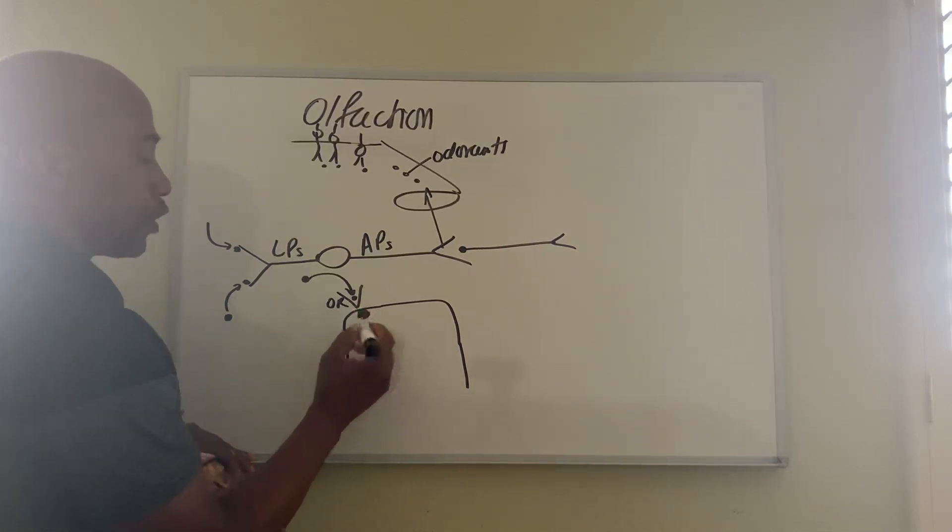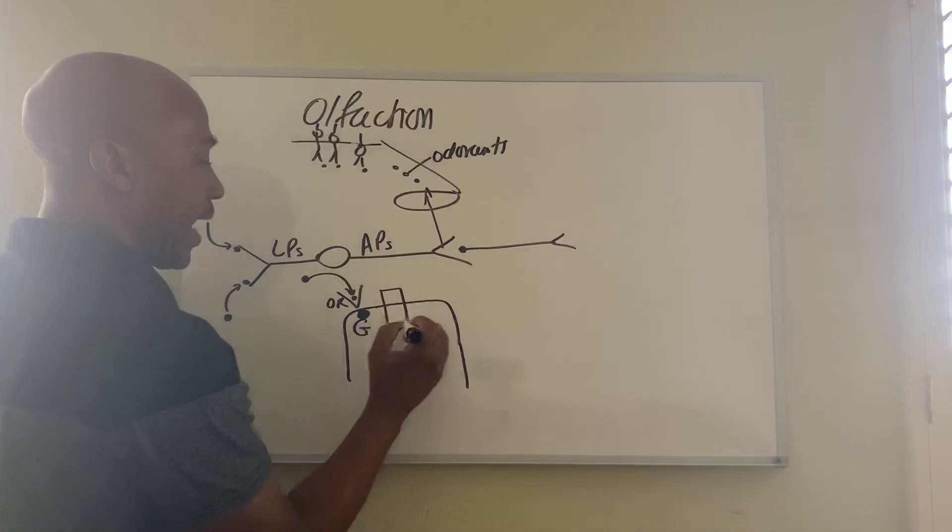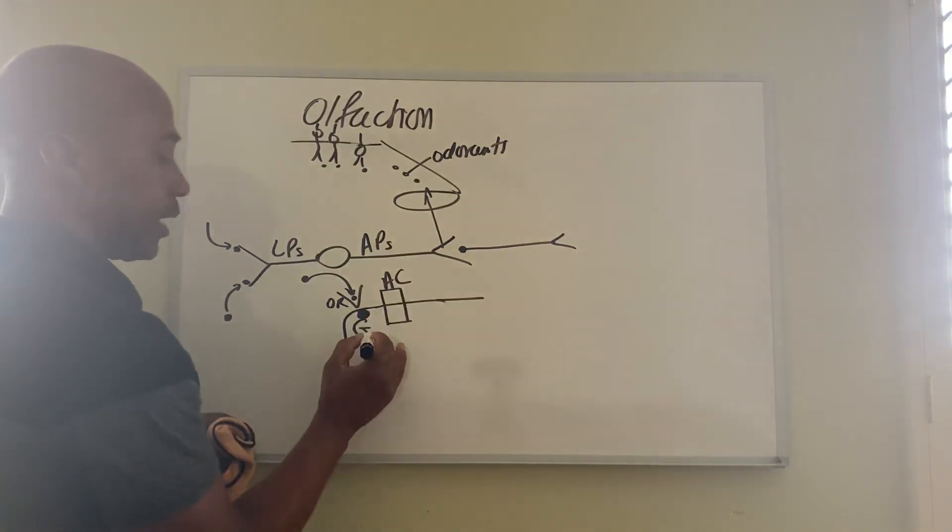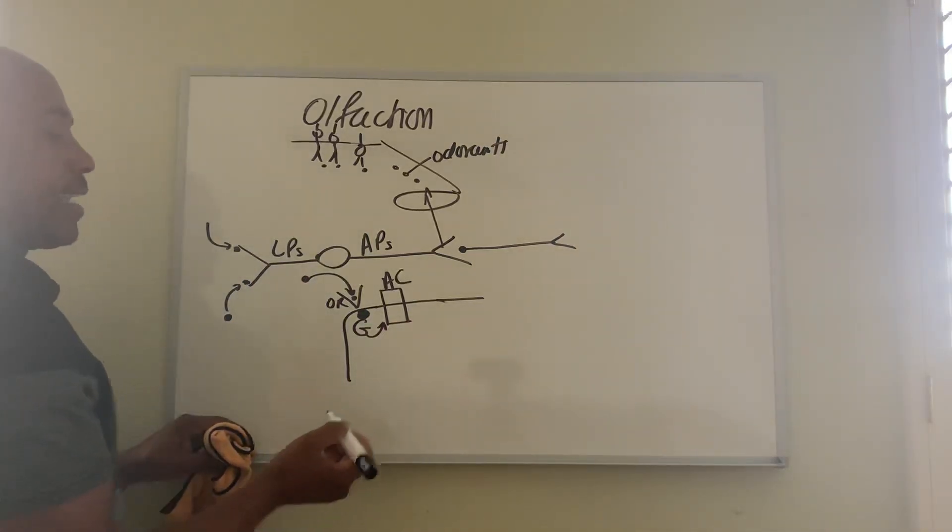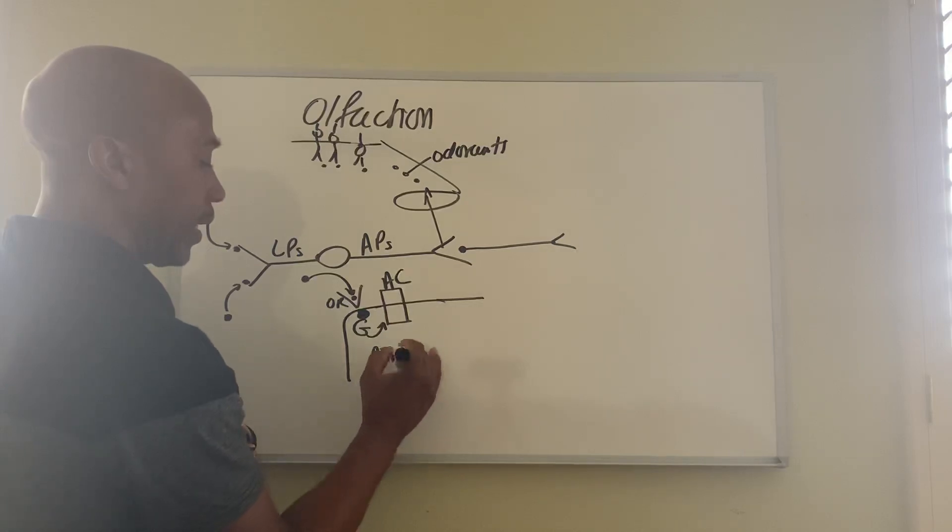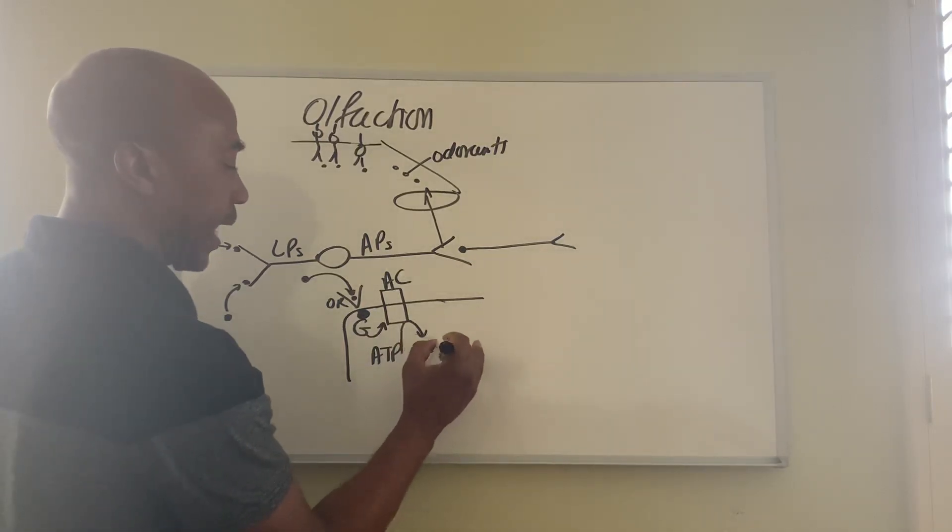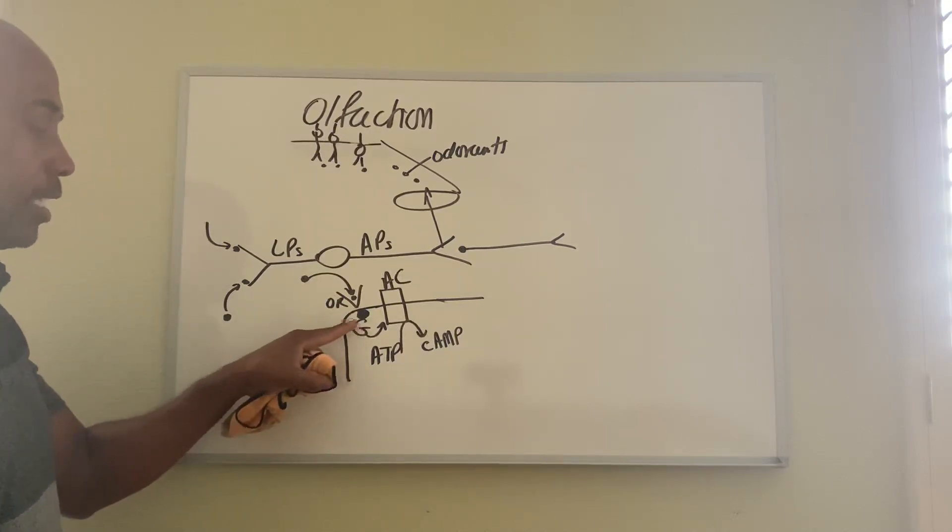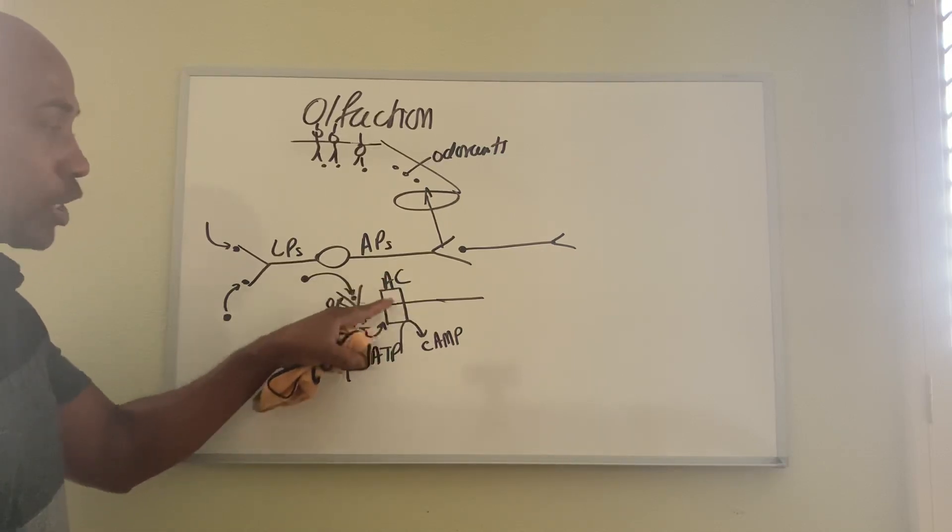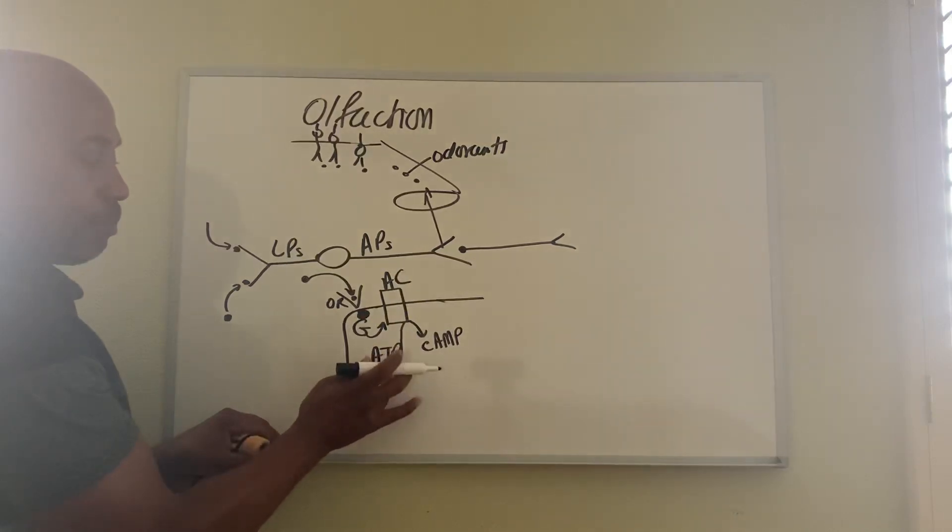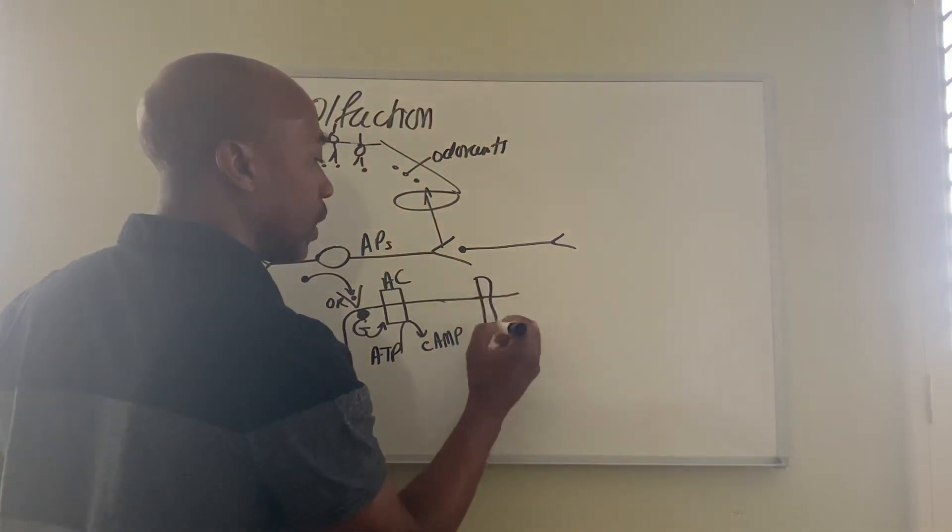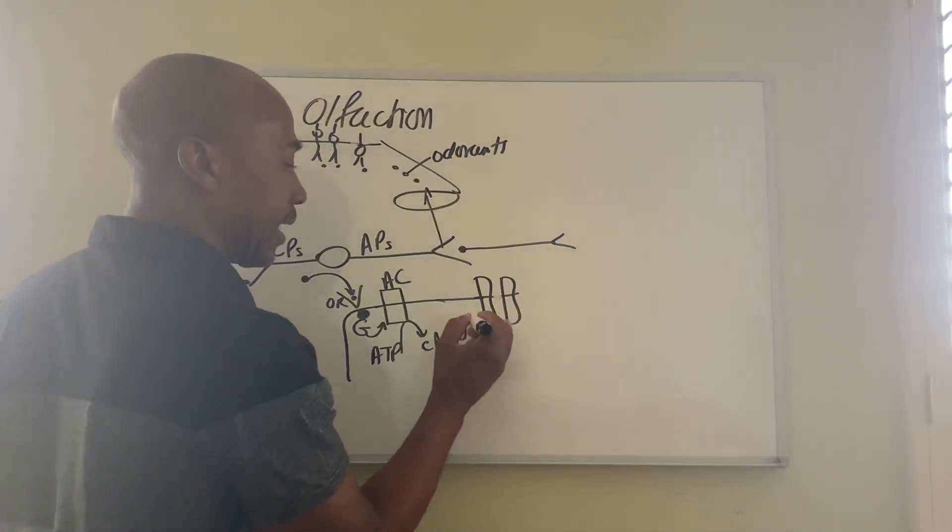The production of, activation of a G-protein. Again, G-protein. Then that G-protein will in turn activate an enzyme called adenylate cyclase. So G-protein activates adenylate cyclase. Then that enzyme will convert ATP, will convert ATP to cyclic AMP, called cAMP.